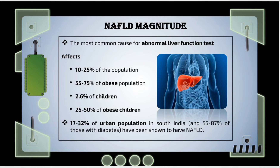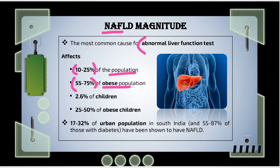Regarding the magnitude of NAFLD: it is the most common cause of any abnormal liver function test. NAFLD can affect approximately 10 to 25% of the general population. However, it can present in 55 to 75% of the obese population. About 2.6% of children are affected, and 25 to 50% of obese children can have NAFLD. About 17 to 32% of the rural population in South India is found to have NAFLD, and 55 to 87% of persons with diabetes are affected with NAFLD.